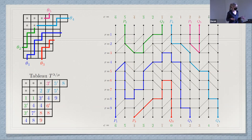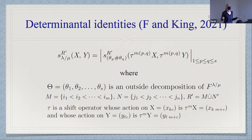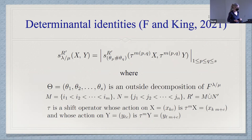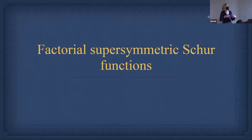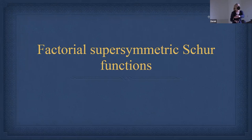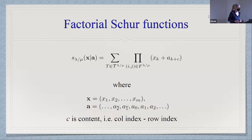The paths and the same sort of Lindström-Gessel-Viennot argument gives the actual identity — very similar to the ninth variation case, but I have to shift both the X's and the Y's, so there are two shifts. For the last bit, I'm going to tell you about the factorial supersymmetric Schur functions. The ninth variation ones are nice but not supersymmetric. Going back to a previous variation in Macdonald's paper — the factorial ones — we can ask: can we get the symmetry? The answer is yes.